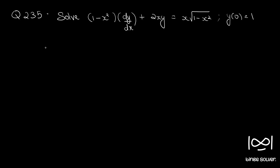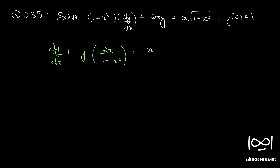If we rearrange the differential equation by dividing throughout by (1 minus x squared) to make the coefficient of dy/dx equal to 1, we get dy/dx plus 2x/(1 minus x squared) times y equals x times the square root of (1 minus x squared) divided by (1 minus x squared).